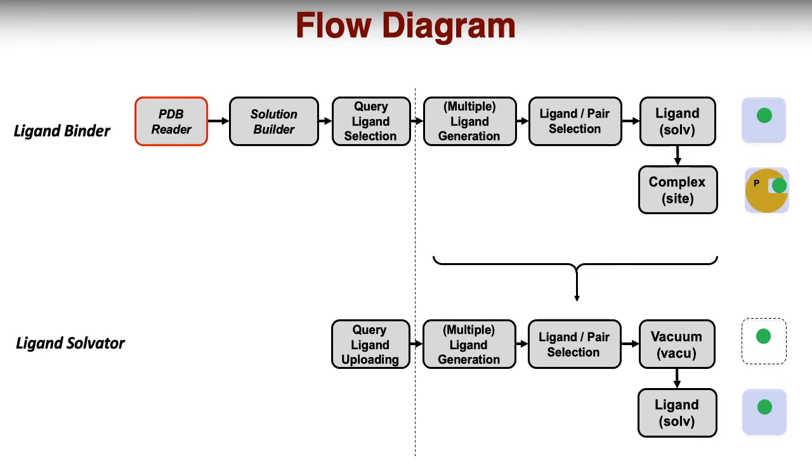The Ligand Binder modules begin by reading a PDB structure containing a target ligand, then building the protein surrounding solution or membrane environment. After that, each ligand molecule must be drawn using the MARVIN editing tool or uploaded as a MOL2 or SDF file. Finally, after ligand pair selection,